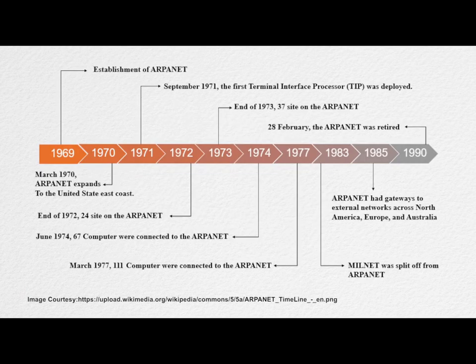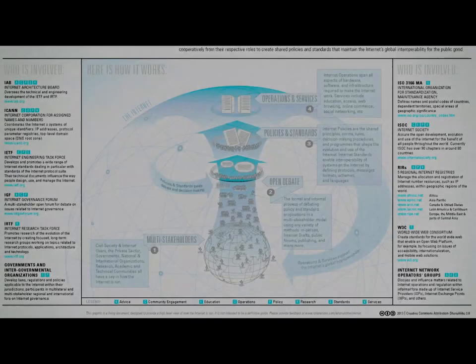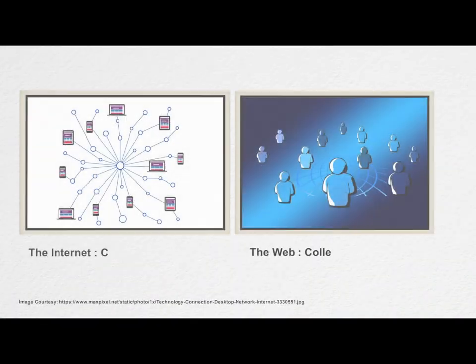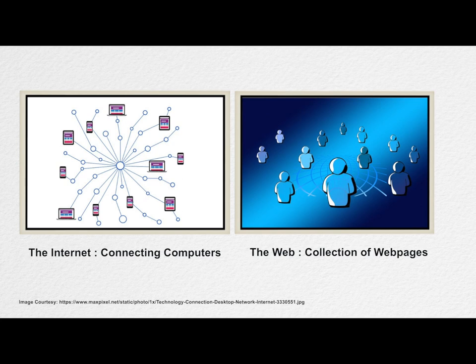Although it started in the 1960s as a military experiment in communication, the internet evolved into a public free broadcast forum in the 70s and 80s. No single authority owns or controls the internet, although there are companies that help manage different parts of the network that ties everything together. We use the term internet and world wide web interchangeably, but they are different.